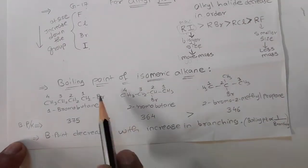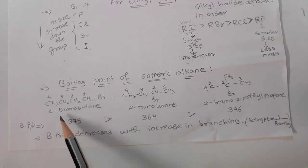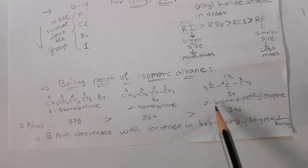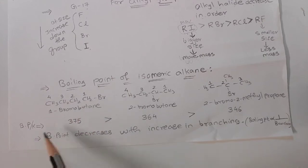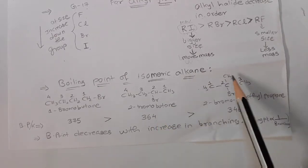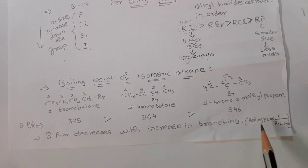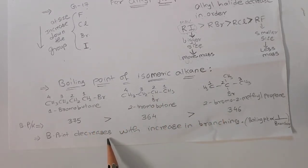Next, regarding boiling point of isomeric haloalkanes — same molecular formula but different structures — consider one-bromobutane (linear chain, BP 375 K), two-bromobutane (branched at second position, BP 264 K), and two-bromo-two-methylpropane (highly branched, lowest BP). As branching increases, boiling point decreases. So boiling point is inversely proportional to branching — always remember this.